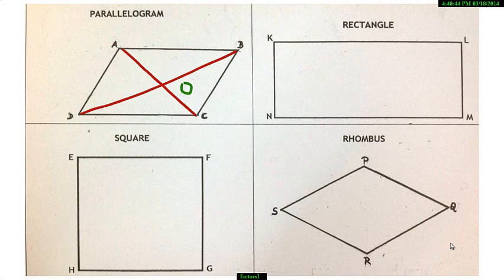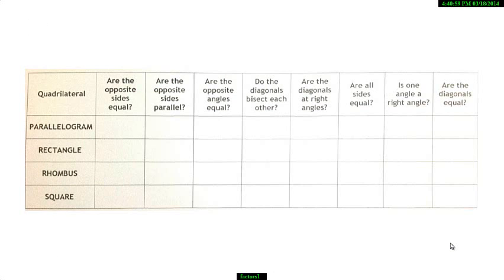Use a thread to check whether opposite sides are equal, adjacent sides are equal, diagonals bisect each other, and whether the diagonals are equal. Now, note your observations in the table provided in your lab observation sheet by putting a tick or a cross.